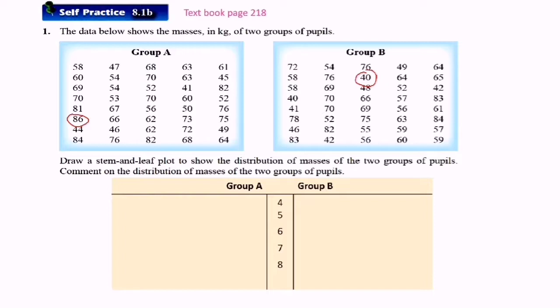After you write the number at the stem, now you write the leaf at both sides. So I start with group A. I find the number from 40 to 49 first. We check which one is the smallest number, 41 here. The last one is 49.